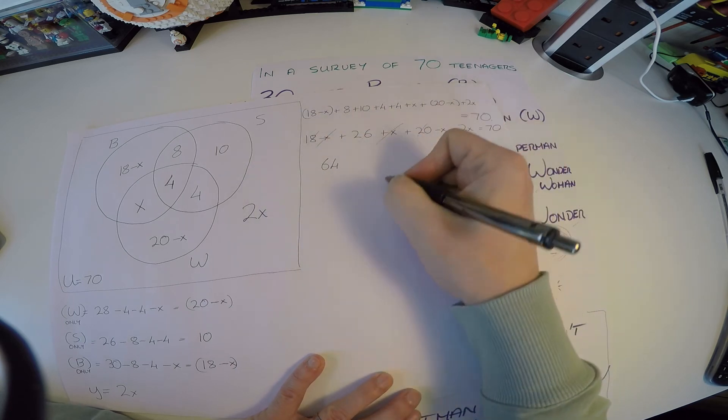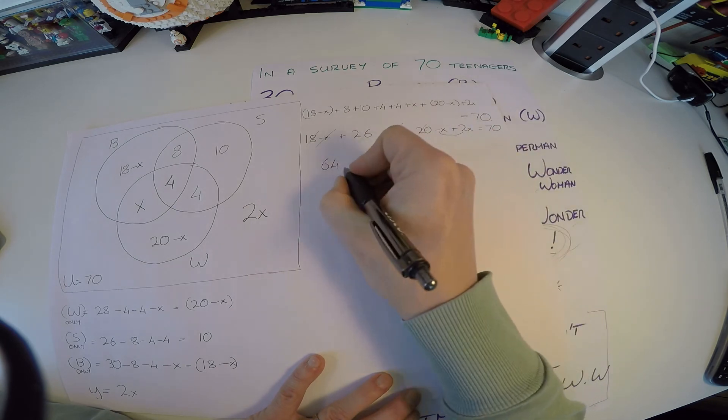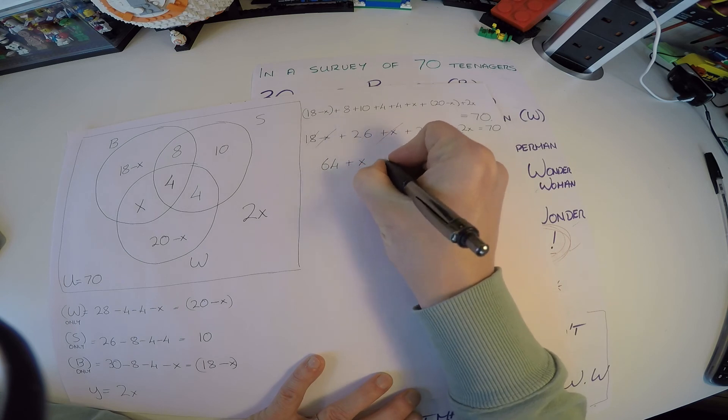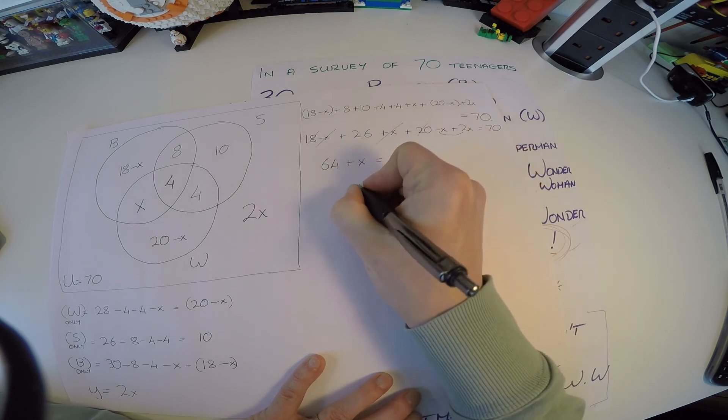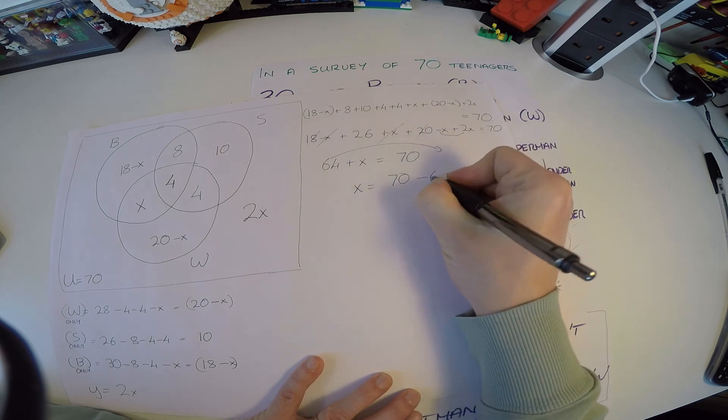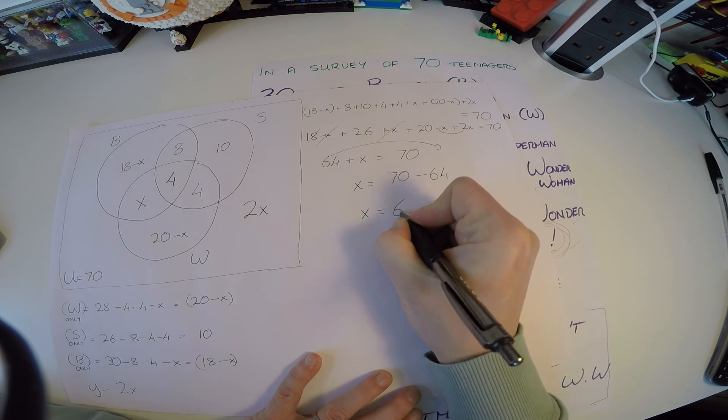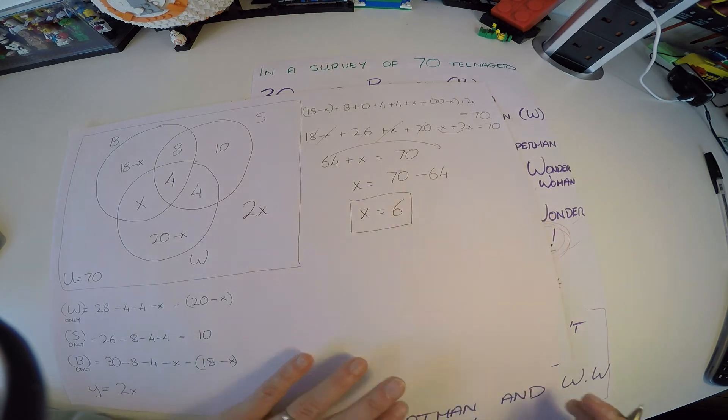And now we have a minus x and a plus 2x. Well, 2x minus x is just simply x, and that's equal to 70. Now it's simply x is equal to 70, let's bring this guy across, he makes minus 64. So x then must be equal to 6. It's done.